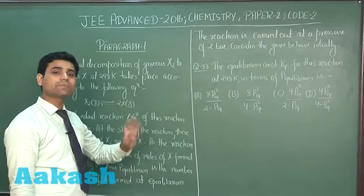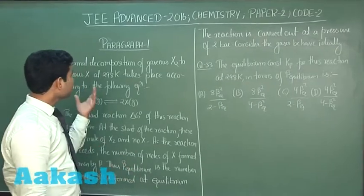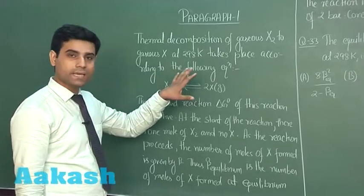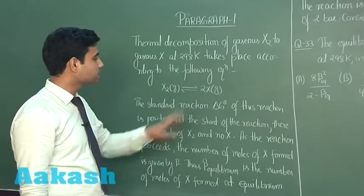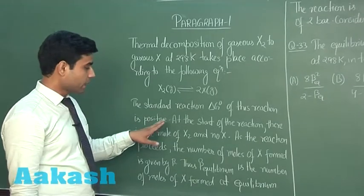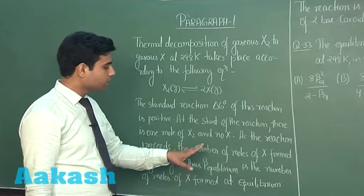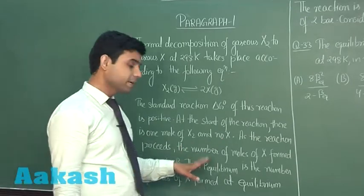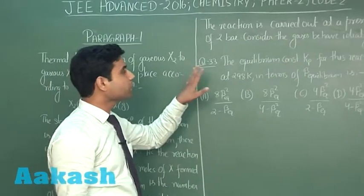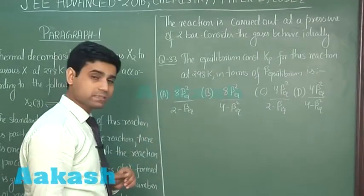This is a paragraph-type question with one paragraph and two associated questions. The paragraph states: thermal decomposition of gas X₂ to gas X at 298 Kelvin takes place according to the equation X₂(g) → 2X(g). The standard reaction delta G° is positive. At the start, there is one mole of X₂ and no X. As the reaction proceeds, the number of moles of X formed is given by beta, so beta_eq is the moles of X at equilibrium. The reaction is carried out at a total pressure of 2 bar, with gases behaving ideally.